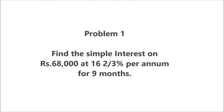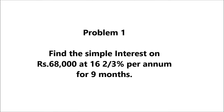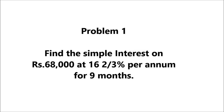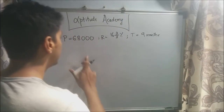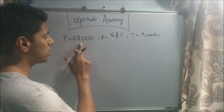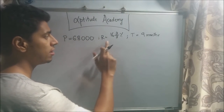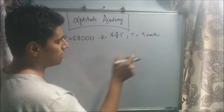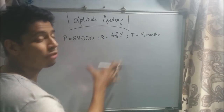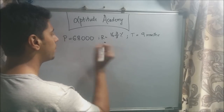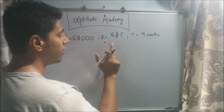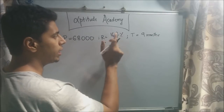Let's start with the first problem. Problem one: find the simple interest on rupees 68,000 at 16⅔ percent per annum for nine months. For this problem, the principal amount is 68,000, the rate is 16⅔ percent, and the time is nine months. Let's rewrite this in the form we like.